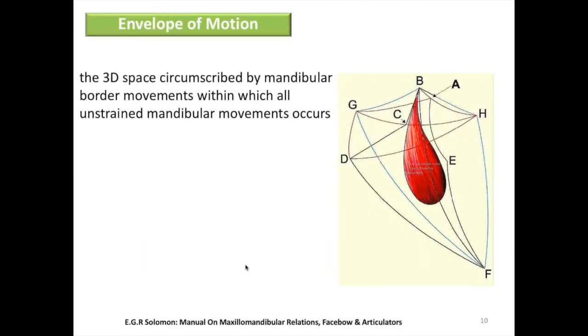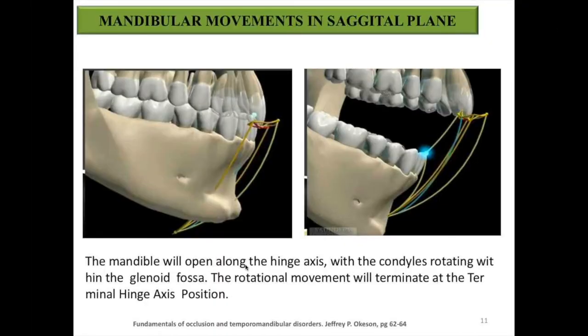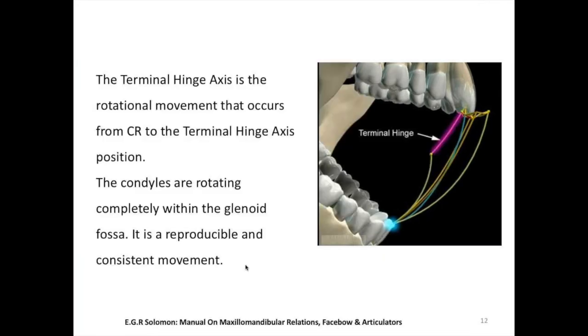The envelope of motion is the three-dimensional space circumscribed by mandibular border movements, within which all unstrained mandibular movements occur. In the sagittal plane, the mandible opens along the hinge axis with the condyle rotating within the glenoid fossa. The rotational movement terminates at the terminal hinge axis position, which is reproducible and consistent. The terminal hinge axis is the axis around which this rotational movement occurs from centric relation.